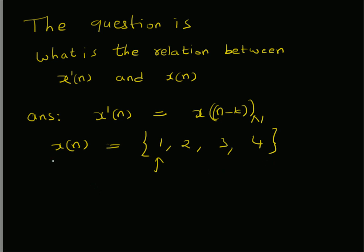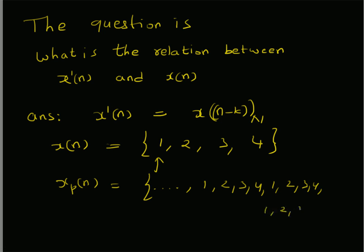Given this sequence, we can easily construct the periodic version, that is xp(n), as follows. xp(n) will be basically a repetition of 1, 2, 3, 4 — that means: ...1, 2, 3, 4, 1, 2, 3, 4, 1, 2, 3, 4 and so on. So that is xp(n). Now, n equals 0 is here, so it has the same values for the previous 4 locations and also the same values for the next 4 locations. So this is xp(n).